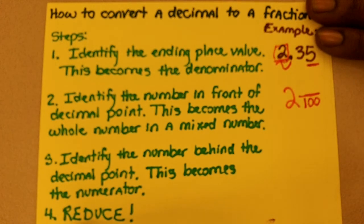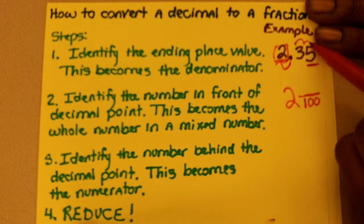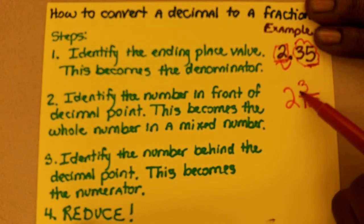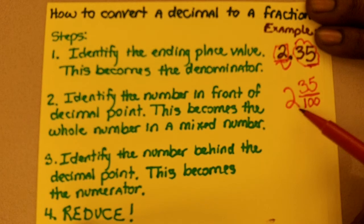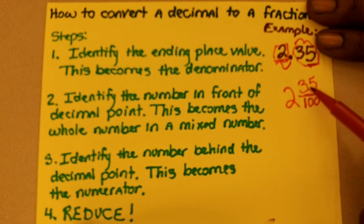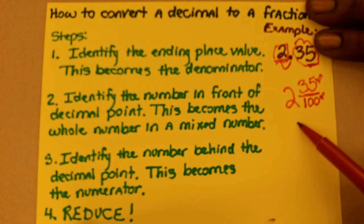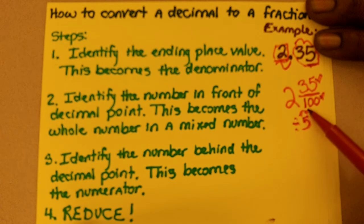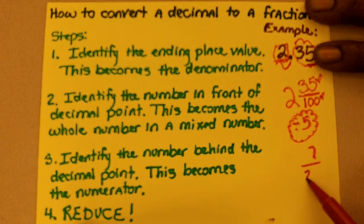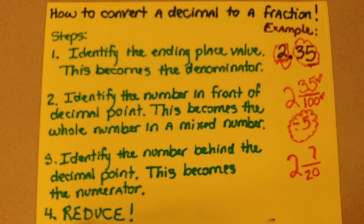Number three, identify the number that is behind the decimal point. That number in this particular example is thirty-five. This is the number that will become the numerator. So what we have is two and thirty-five over one hundred, which leads me to step four: reduce. Reduce simply means to think of a number that goes into both the numerator and the denominator. The only number I can think of is five. So I'm going to reduce my numerator by five — that would be seven — and reduce my denominator by five — that would be twenty. You just keep the whole number, in this case it's two, making your answer two and seven-twentieths.